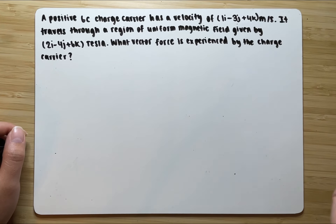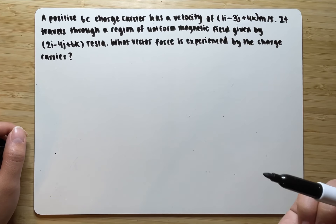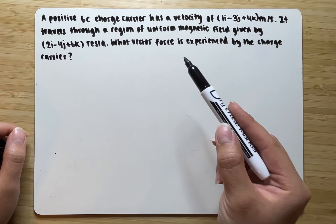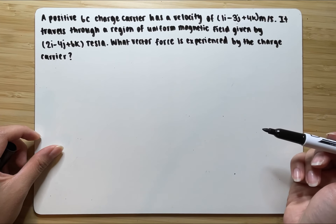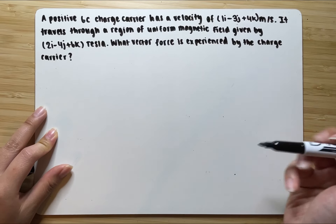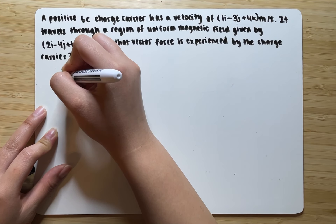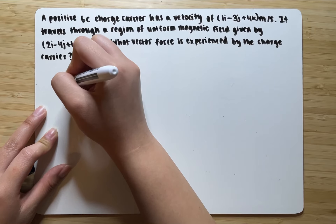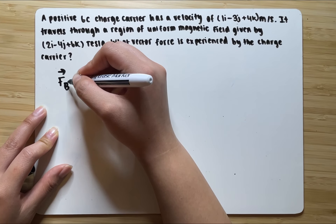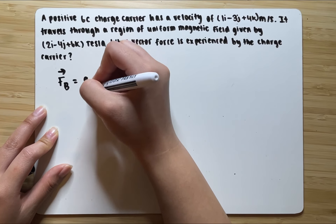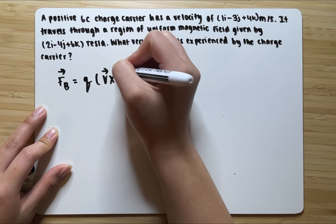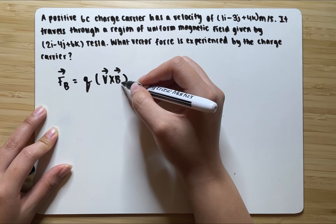In a problem like this that has to do with the magnetic field, the force we're trying to find is the magnetic force. When we're given a problem that asks what the magnetic force is, the first thing we want to do is write down the equation. The equation for magnetic force is: force equals the charge times the cross product between the velocity vector and the magnetic field vector.